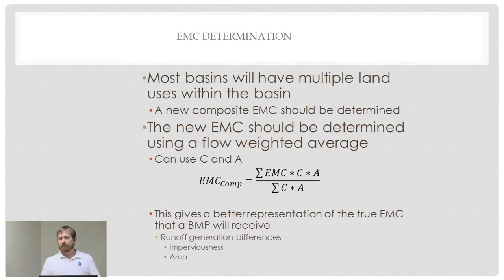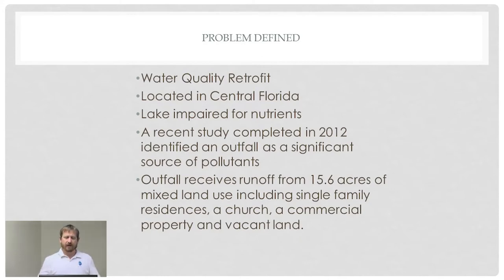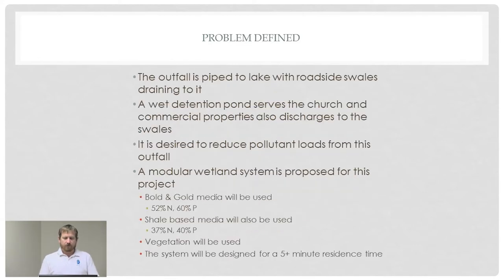Different land use types are going to have different characteristics, so this will take that into account. We're going to show how this is done by running through a quick example problem. This is actually a water quality retrofit located in central Florida. We're dealing with a lake that's impaired for nutrients. A recent study completed in 2012 identified an outfall as the primary source of nutrients to this lake, and that outfall takes runoff from a just-under-16-acre area that has multiple land uses within it.